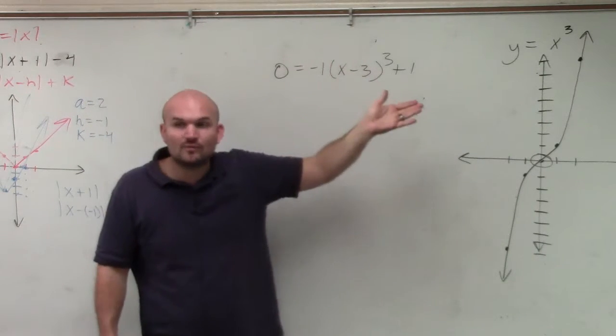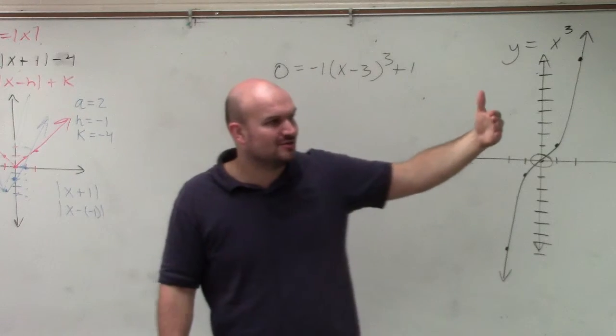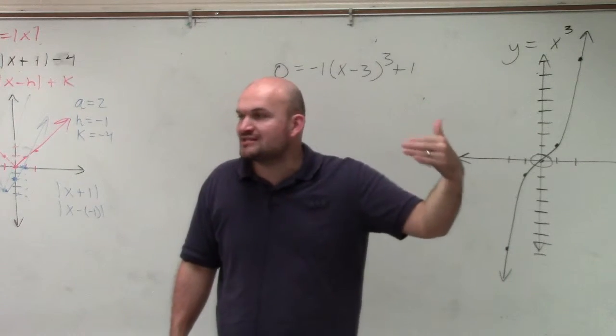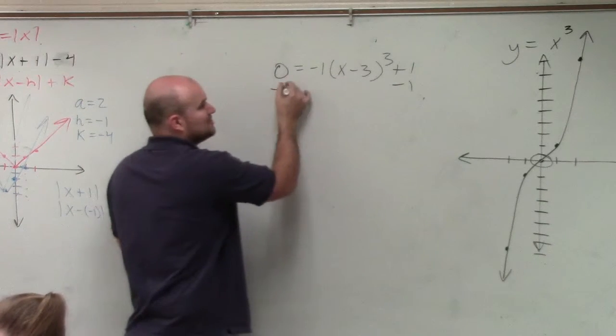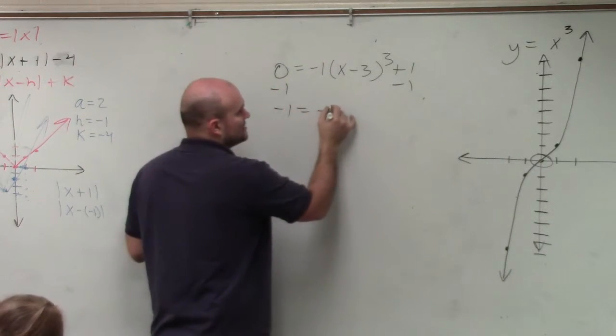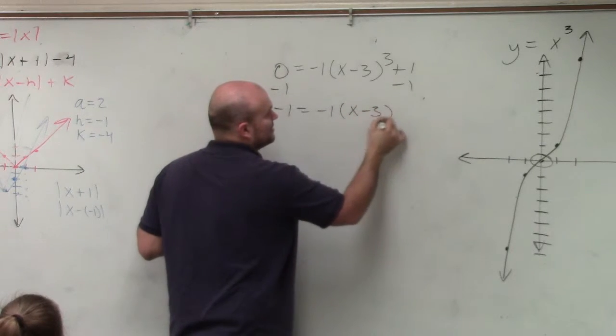So guess what? We can solve for one variable. It doesn't matter what power it's raised to. We just need to use inverse operations. So just from algebra 1, subtract the 1 on both sides. Negative 1 equals negative 1 times x minus 3 cubed.